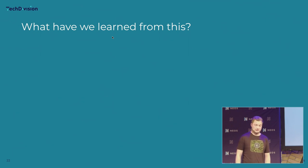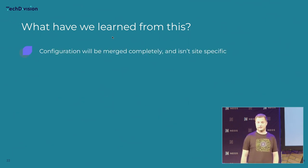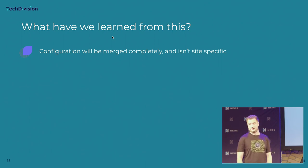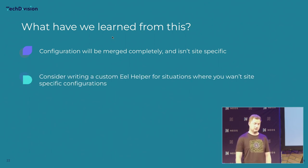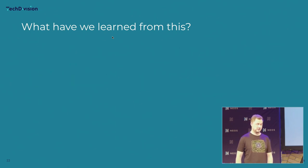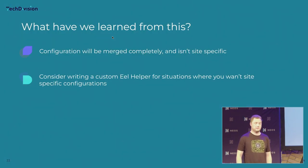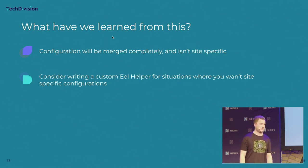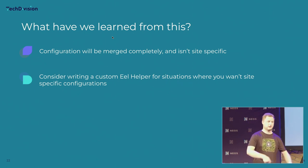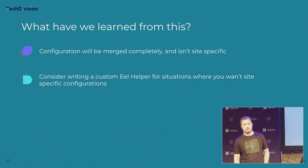What have we learned from this? The configuration will be merged completely and is not site-specific. You might consider writing a custom EEL helper which does all of the abstraction shown, and in that EEL helper you could also include some fallbacks to the default configuration. You can even abstract the logic of getting the current site node name in there.